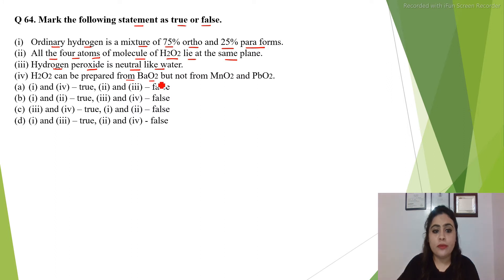Hydrogen peroxide can be prepared from BaO2 but not from MnO2 and PbO2. So, the correct statement is yes, ordinary hydrogen is a mixture of 75% ortho and 25% paraforms.